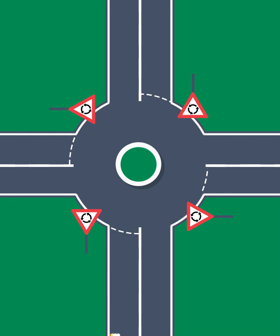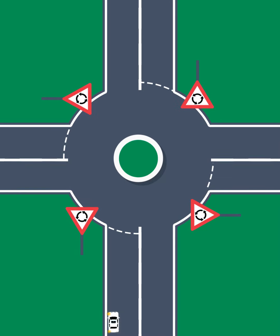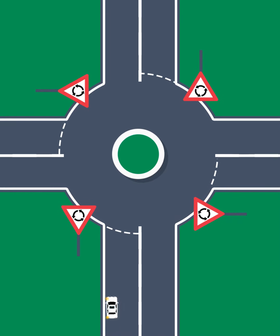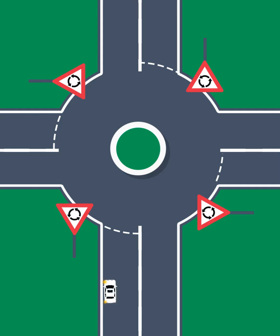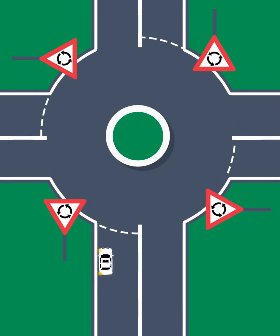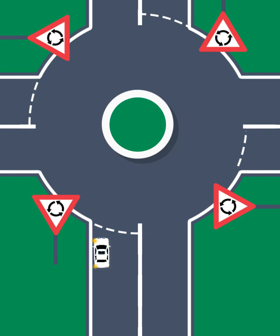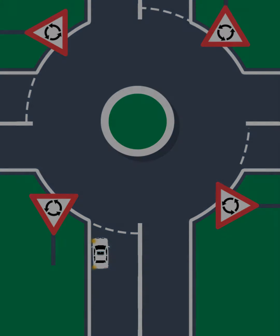When you approach a roundabout, you must use your indicator if you intend to turn left or right, or make a U-turn at the roundabout. You must give other road users sufficient notice of your intent to turn.